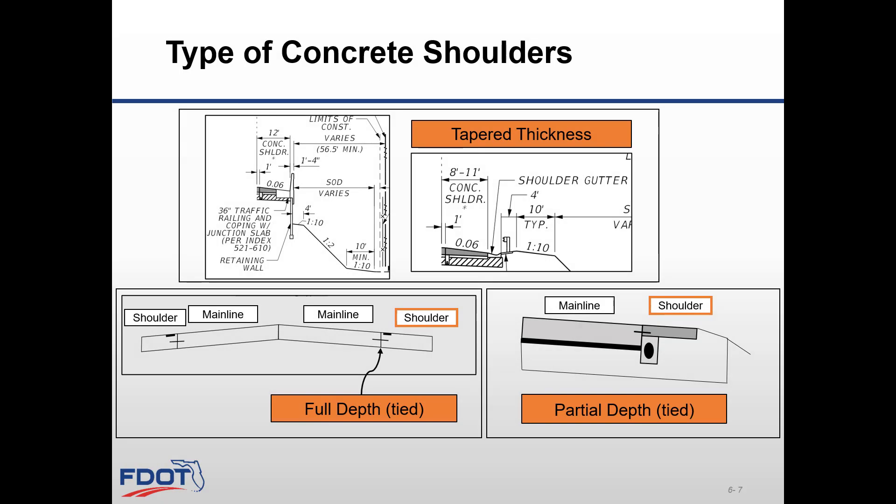The following are some of the different types of concrete shoulder that are available. Tapered thickness: this is recommended for use on limited access facilities. The thickness of the shoulder tapers out depending on the width and slope of the shoulder, as shown in the two top typical details on the slide. The minimum thickness should be no less than 6 inches.